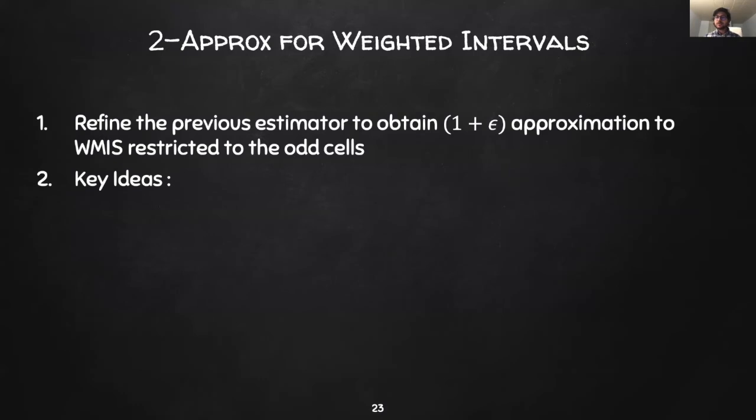All right, now I'll outline how to obtain a 2 approximation for weighted intervals. We begin by refining our estimator to instead obtain a 1 plus epsilon approximation with the weighted MIS restricted to the odd cells. Once we can do this, we obtain a 2 approximation overall. We begin by partitioning each cell into finer geometrically increasing weight classes.